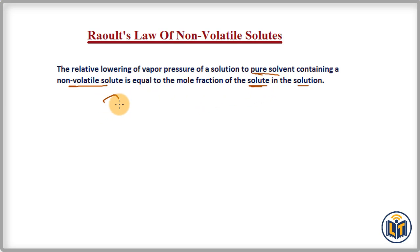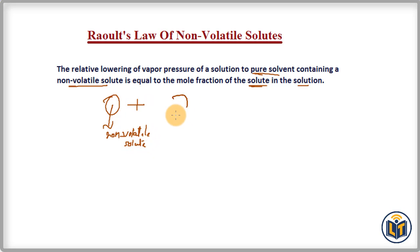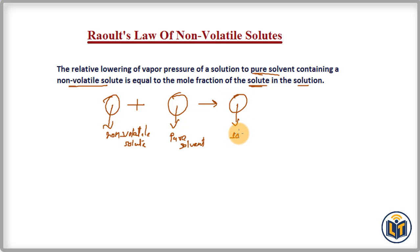When we add a non-volatile solute to a pure solvent, the vapor pressure of the solvent decreases. Assume this is a non-volatile solute, and when it is added to a pure solvent, it will make a solution. When a non-volatile solute is added to a solvent, the vapor pressure of the solvent decreases.